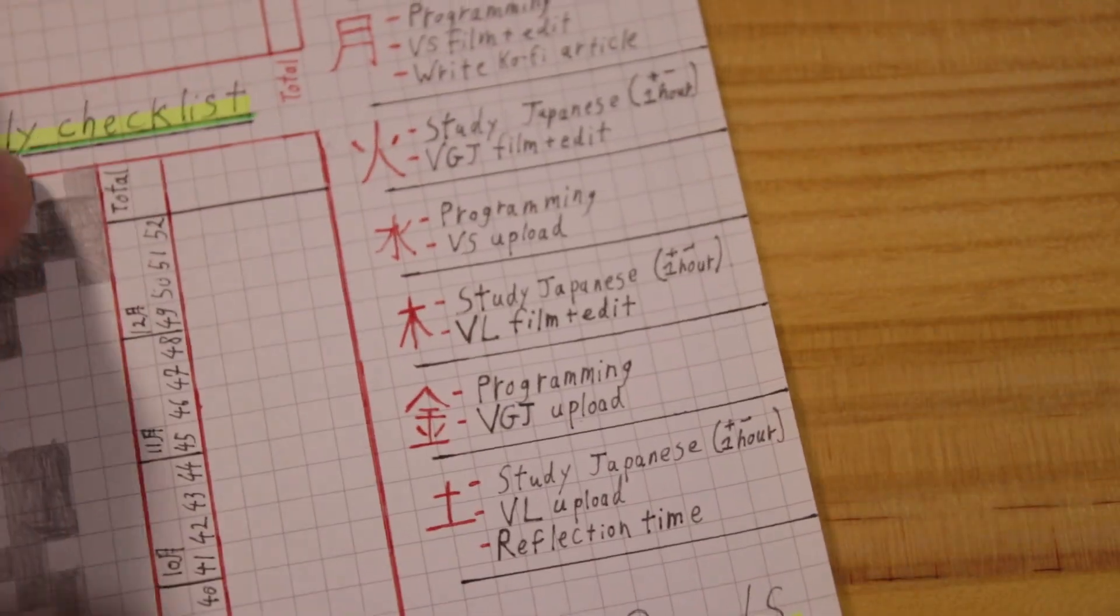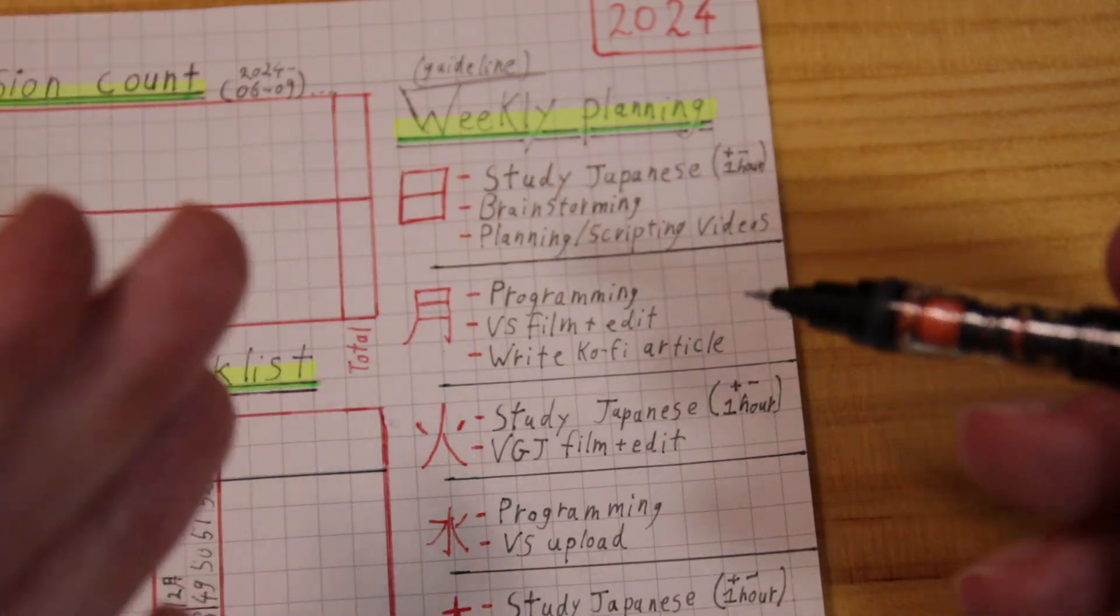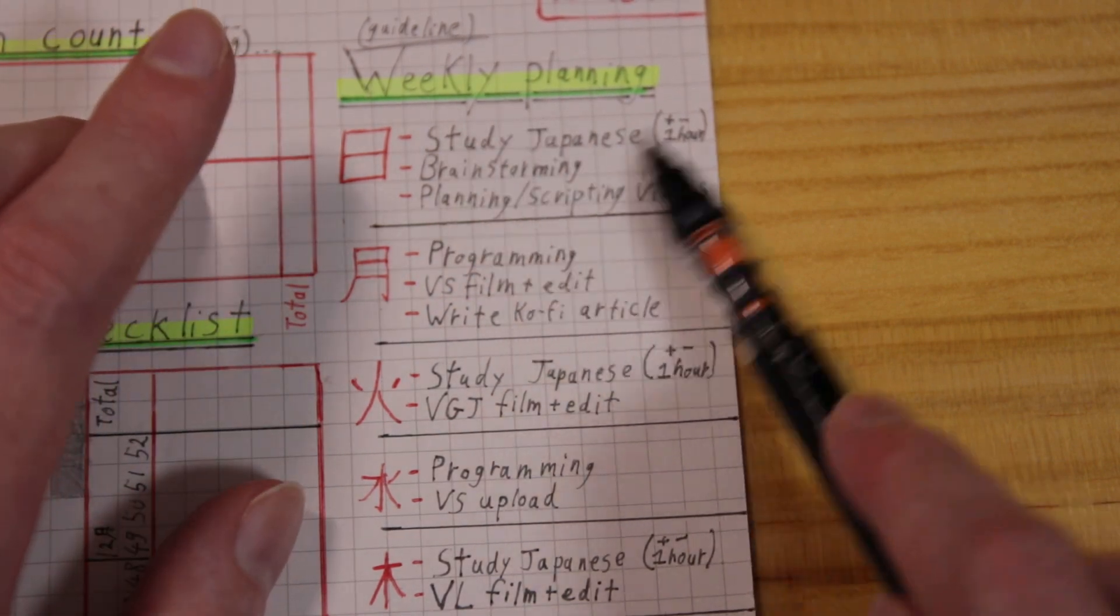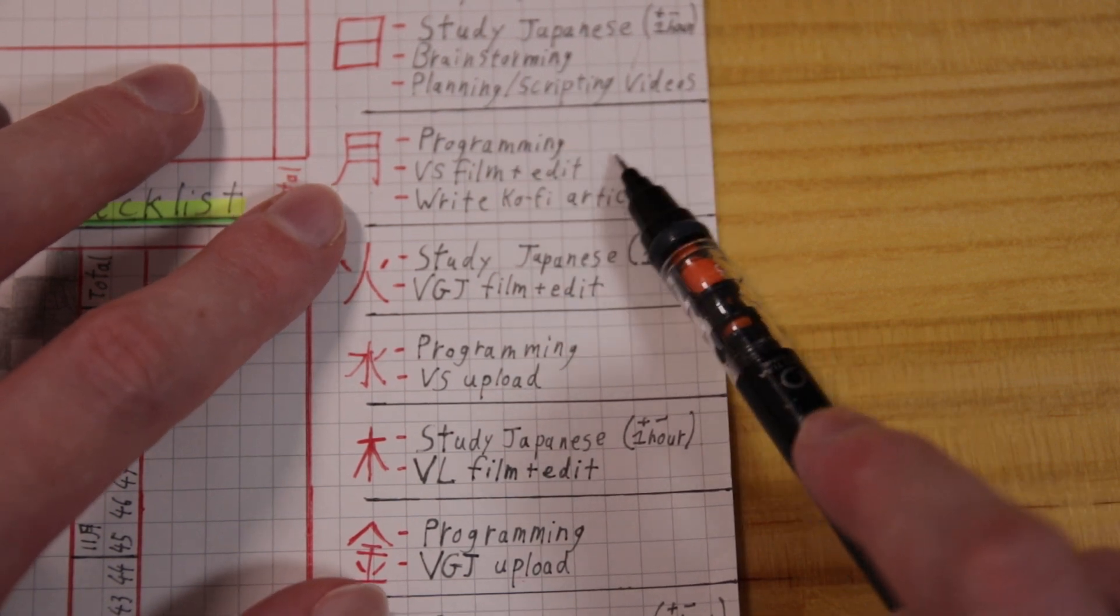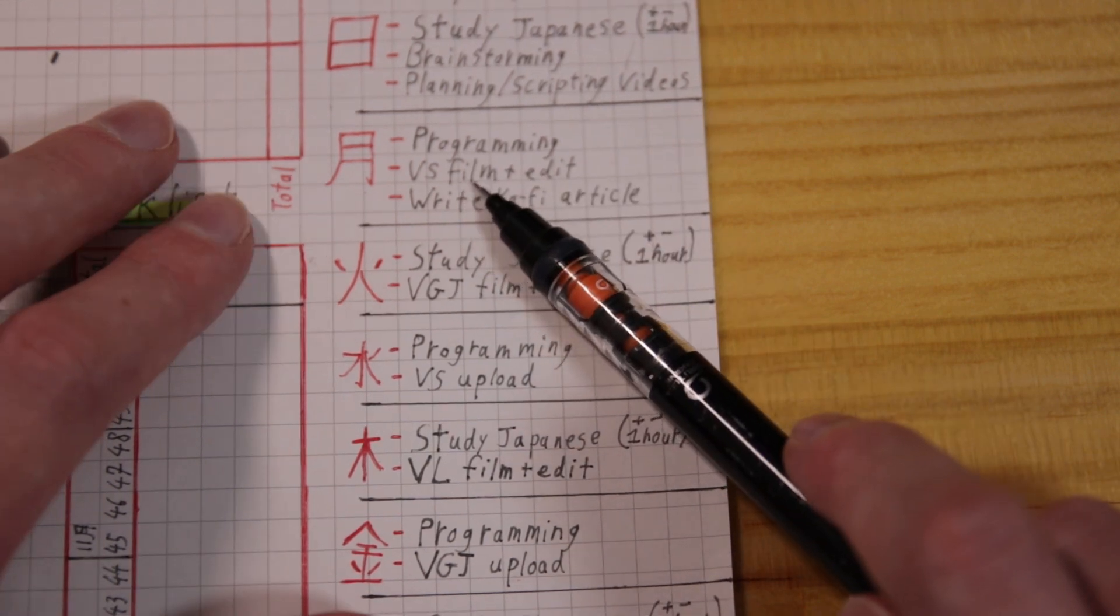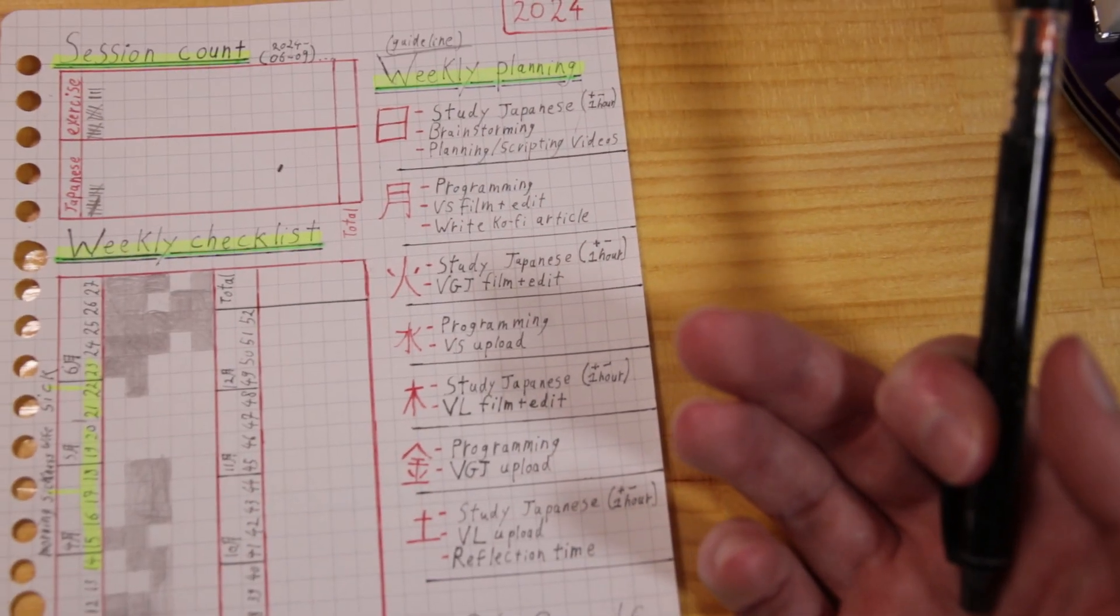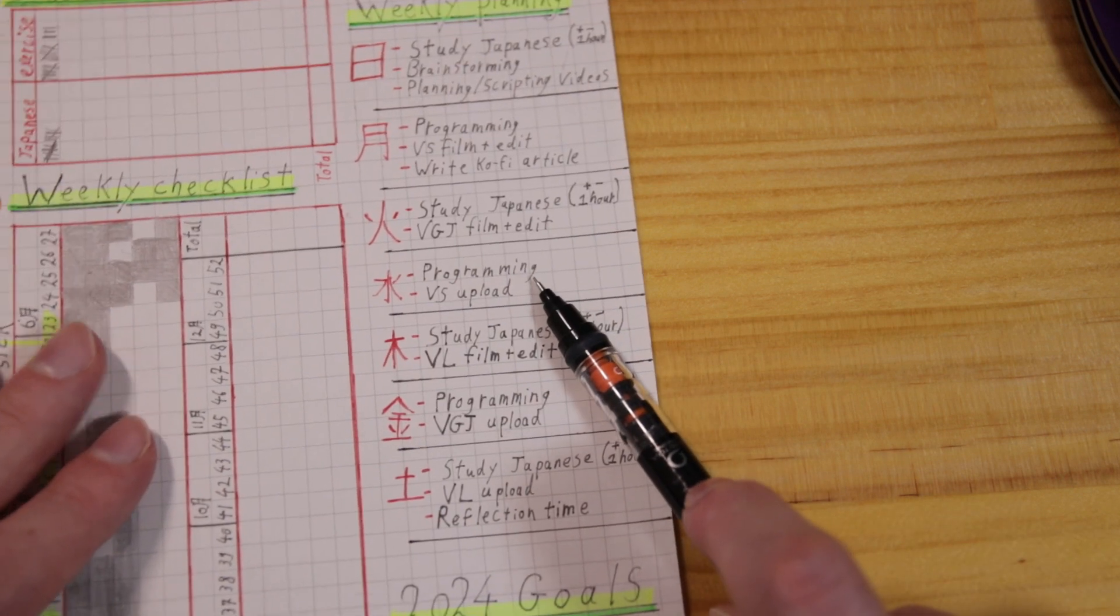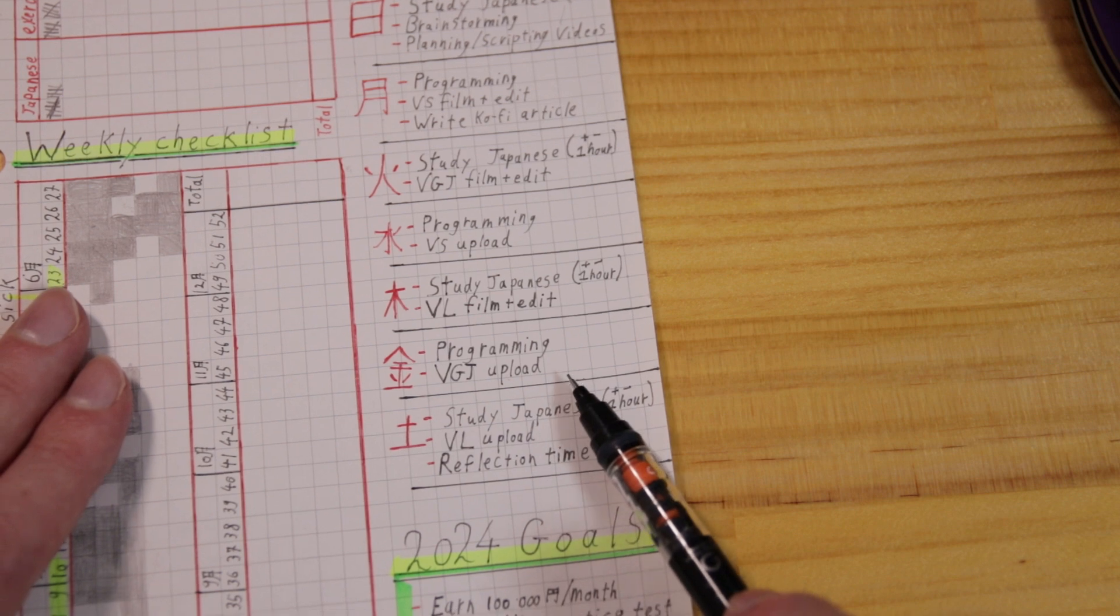Then we go over to a guideline. I really specify that this is a guideline because I don't really follow it that closely. On Sundays I study Japanese. I do my brainstorming and planning and scripting of videos. This is something I still do. Then we have Mondays, I do programming. I try to focus some time on programming, filming and editing. Writing Ko-fi articles. So writing Ko-fi articles I still do, programming I mainly try to do, and filming for Voilens Sensei I mainly do it whenever I feel like it nowadays. I'm not that strict with the whole schedule anymore. And then again, study Japanese, film and edit for Voilens Sensei and the journey. Programming, VS upload. Study Japanese again for an hour, film and edit. Programming, Voilens Sensei and the journey upload.